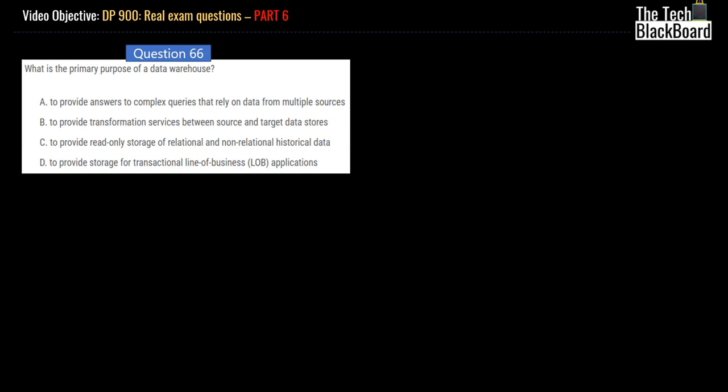Now let's look at question number 66. Question number 66 is related to data warehouse. Let's look at the question. It says what is the primary purpose of data warehouse? Let's look at the options from below. Option D is to provide storage for transactional line of business applications. Or option C, to provide read-only storage of relational and non-relational historical data. Or is it option B, to provide transformation services between source and target data stores? Or to provide answers to complex queries that rely on data from multiple sources?